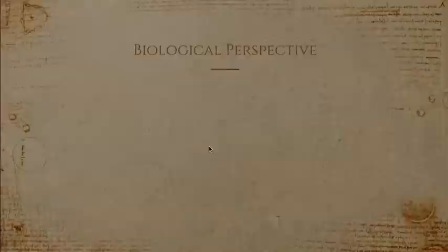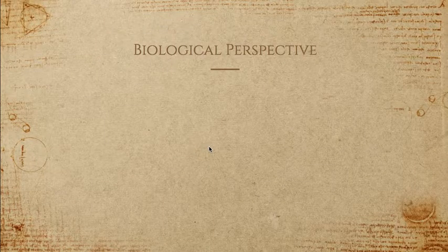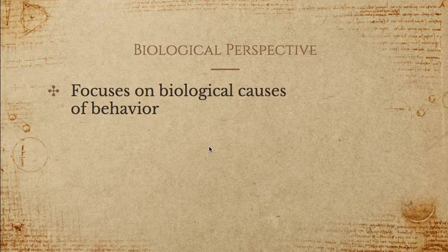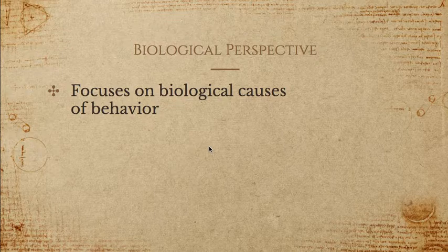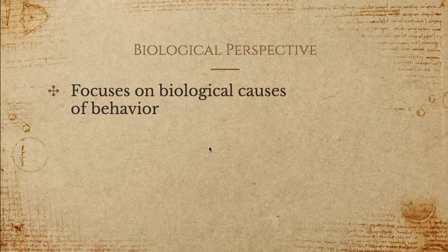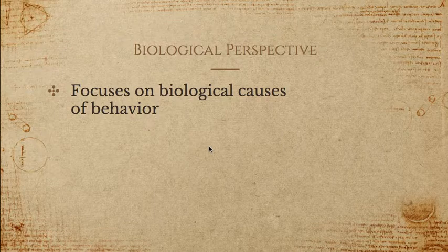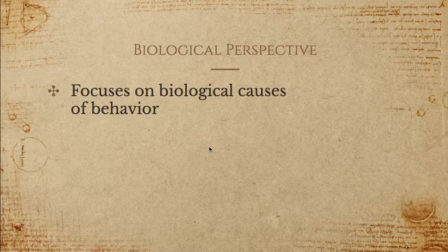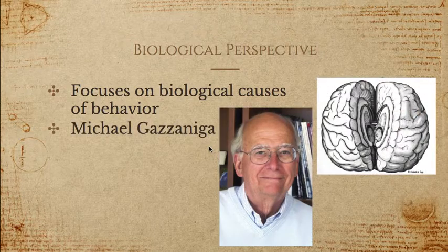The next unit is biology. The biological perspective is all about the physical causes of your behavior. It could be issues with your brain — neurons, chemicals, neurotransmitters, brain structures. Obviously if you have something wrong with your brain, it's going to affect how you behave. I believe there was a test question about someone having a stroke — a stroke causes physical problems with your brain, so the biological perspective would apply to behavior changes after a stroke.